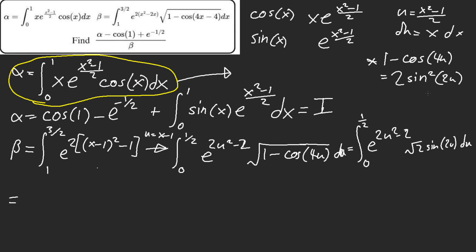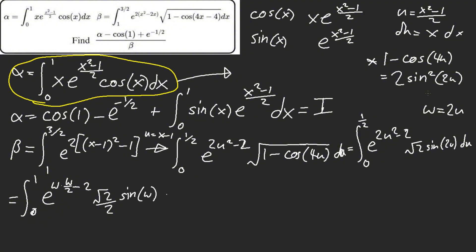Now this is equal — I'm sorry. Let w equal 2u. Now we have zero to one. And now we go ahead and do w: w times w over two, minus two, and then root two over two for that dw. And then sine of w. Now this gives us one over root two · e^(w²/2 - 2) · sine(w).